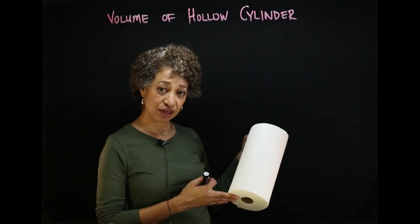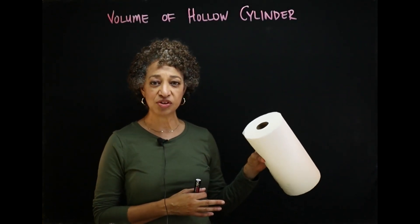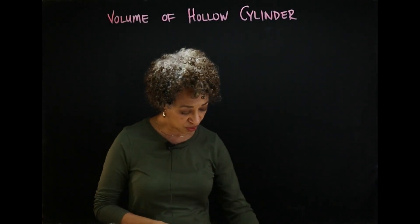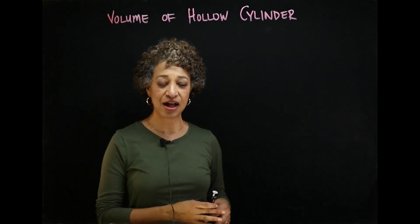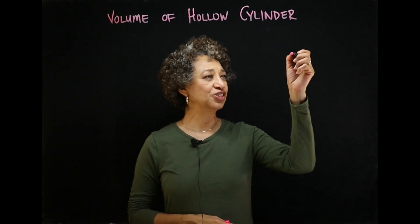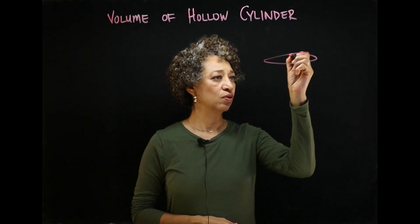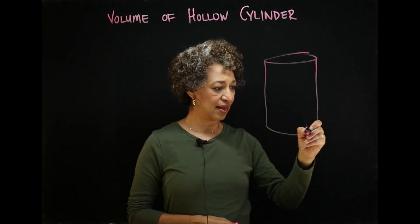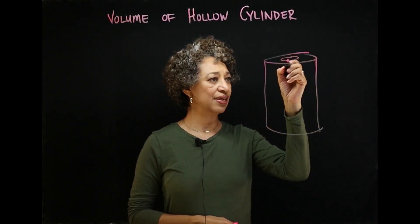So I have brought for you a hollow cylinder. This is a roll of paper towels. I've already measured the dimensions of this roll and we're going to try to find the volume of it. Let me try to sketch it for you. Looks something like that. It has a hole in it.